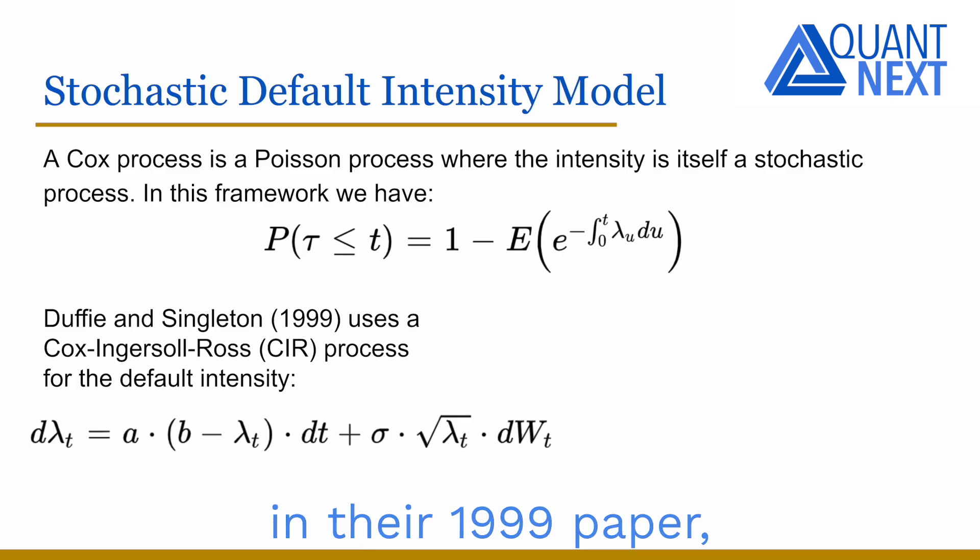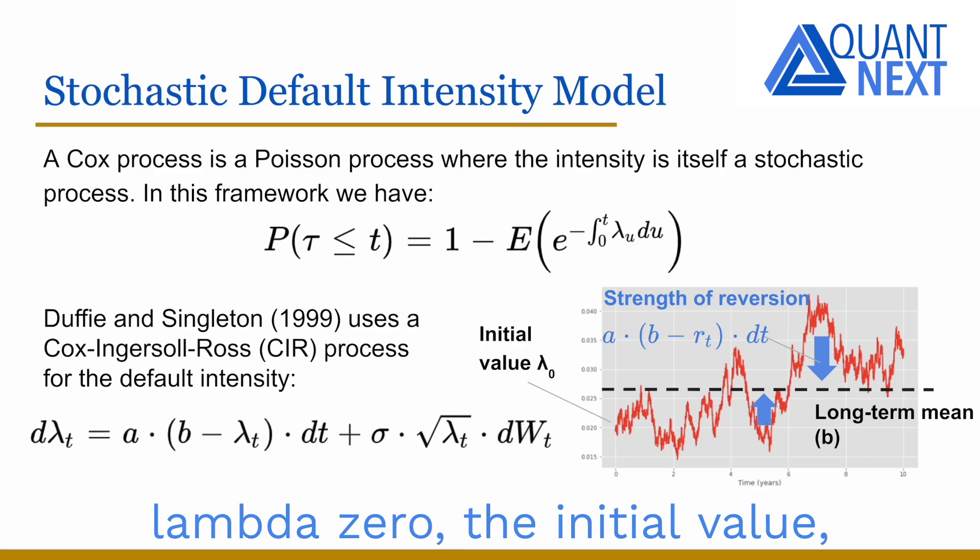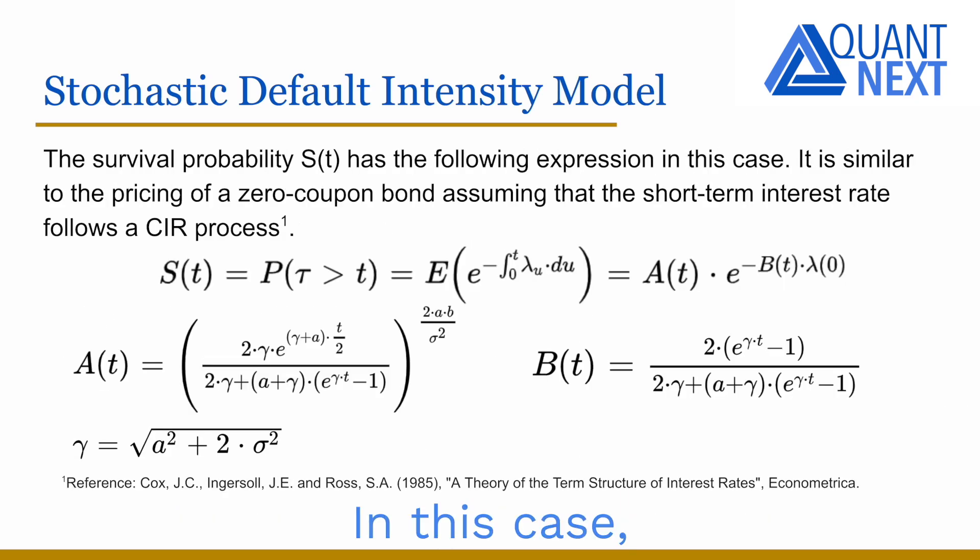Duffie and Singleton, in their 1999 paper, use a Cox-Ingersoll-Ross process for the default intensity. It is a mean reverting process controlled by four parameters: lambda_0 the initial value, b the long-term average, a which controls the strength of reversion to the mean, and sigma, the volatility of the process.